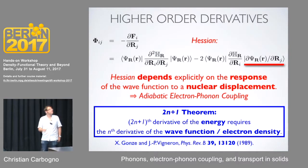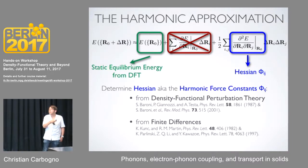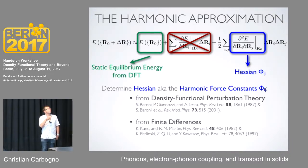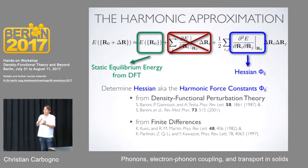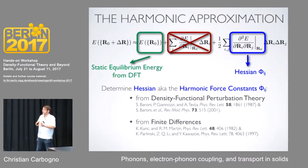You can calculate this Hessian in two different ways. One way is to use density functional perturbation theory — you look at the perturbation of your wave function and calculate that. Or you can use finite differences. Let me give a short overview of what the different methods do and what the difference is.